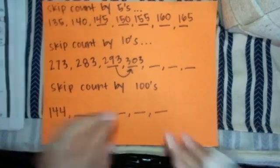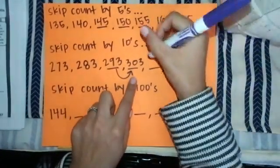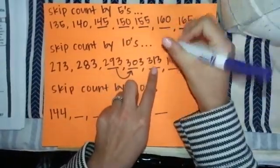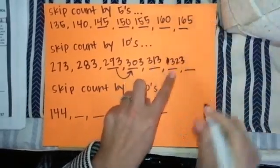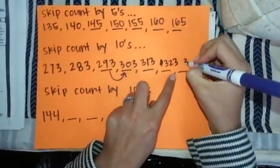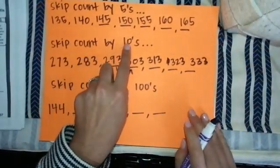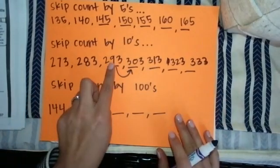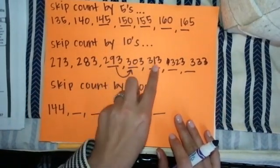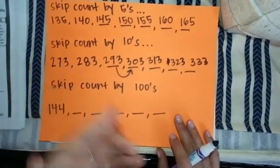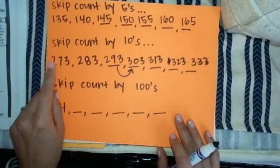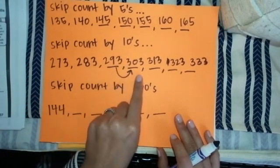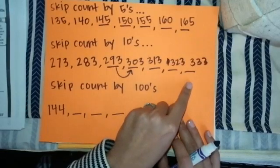Now what we could do is we continue on with our pattern of our tens place going up. We have 313. We have 323, and then we have 333. As you can see, when we're skip counting by tens, that tens place is going up. We have 70, 80, 90, then zero, 10, 20, 30 in that tens place. So when we're counting by 10, starting at 273, it's 273, 283, 293, 303, 313, 323, 333.